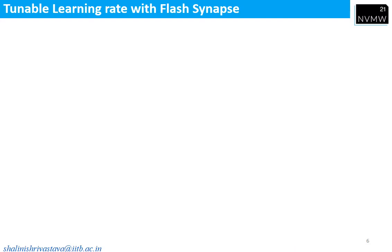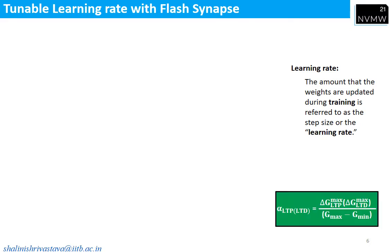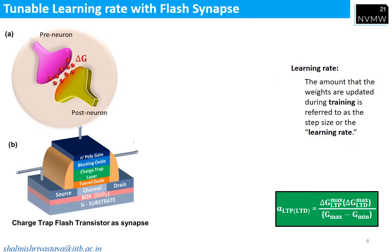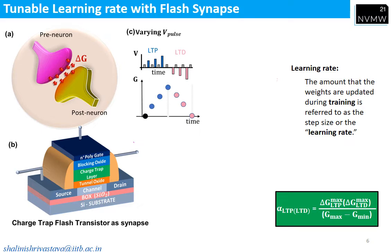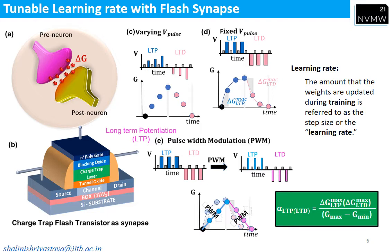How to get tunable learning rate? By definition, the amount at which weights are updated during training is referred to as the learning rate. Mathematically, it is defined as the amount of conductance change normalized by total conductance change. For flash memory working as a synapse, conductance change can be varied by two methods: varying pulse amplitude, which results in extra burden on peripheral circuits; or fixed pulse amplitude, which is more energy efficient but gives non-linear conductance change. Linear conductance change can be achieved by modulating the input pulse width, as shown in the figure. A larger pulse width gives non-linear conductance change, while a smaller pulse width results in linear conductance change and tunable learning rate.